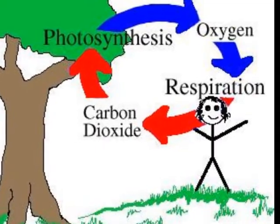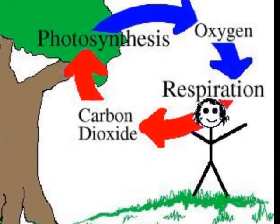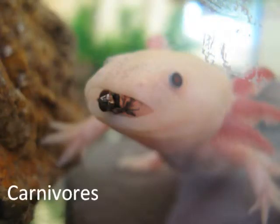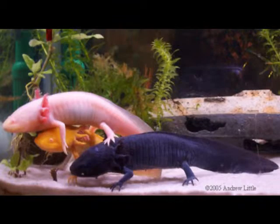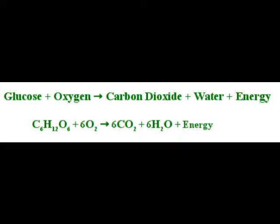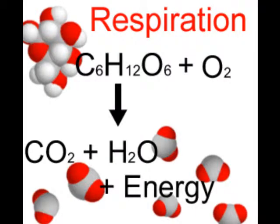Axolotls get glucose into their cells this way because they are carnivorous and eat animals. They also get oxygen this way as they live in the water, are amphibians, and have lungs. As soon as glucose and oxygen are present in the cells, respiration takes place. Axolotls respire this way because this is how they get their energy from food.